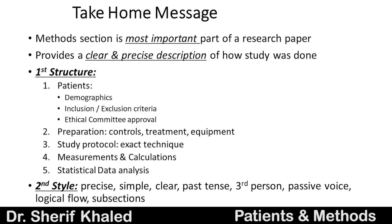The take-home message: the methodology section is the most important part of the research paper. It provides a clear and precise description of how the study was done. It consists of two parts — patients and methods. The structure covers patient demographics (age, gender, racial composition), inclusion and exclusion criteria, and must include ethical committee approval. Then preparation: control group, treatment variables, and equipment. The study protocol must describe the exact technique in chronological order. Include measurements and calculations, and statistical data analysis. For writing style: precise, simple, clear, past tense, passive voice, avoid 'I,' maintain logical flow, and use subheadings if the section is large. Thank you.